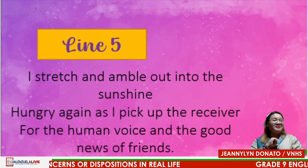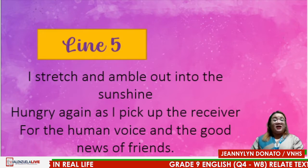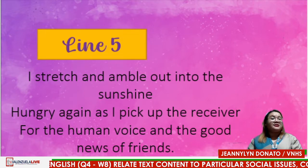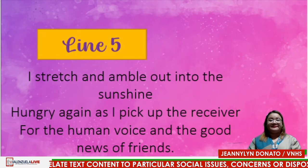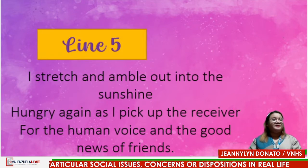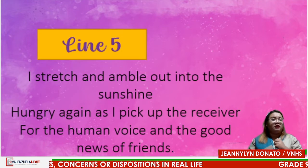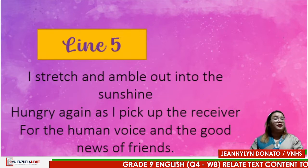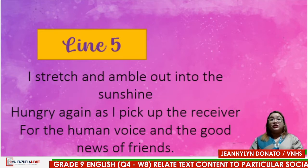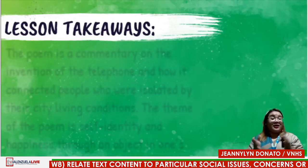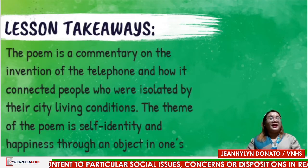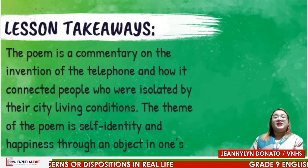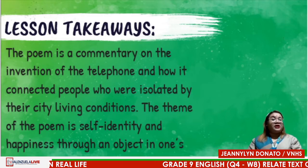Let's go with the last line, line number five: 'I stretch and tumble out into the sunshine, hungry again as I pick up the receiver for the human voice and the good news of friends.' What does the speaker hunger for? The speaker shows hunger for connecting to the world — the idea that someone texted or called him. Through the telephone, the speaker is connected to people and to the world. The telephone is a commentary on the invention of the telephone and how it has connected people who are isolated by their city living conditions. The theme of the poem is self-identity and happiness through an object in one's life.